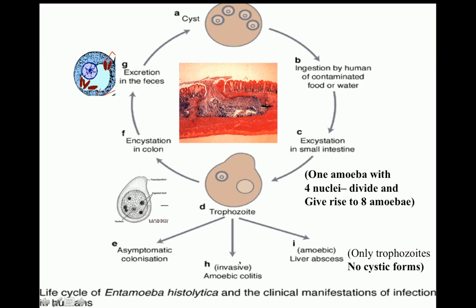These eight motile amoebae move to the large intestine and either colonize there as asymptomatic colonies or invade the intestinal mucosa and lodge in the submucosa of the large intestine. They start multiplying and secrete a proteolytic enzyme known as histolysin. This histolysin breaks down the muscularis mucosa of the intestine, resulting in production of flask-shaped ulcers. When these ulcers are produced, a large number of blood and mucus together with trophozoites is released into the intestinal lumen, resulting in acute amoebic dysentery.